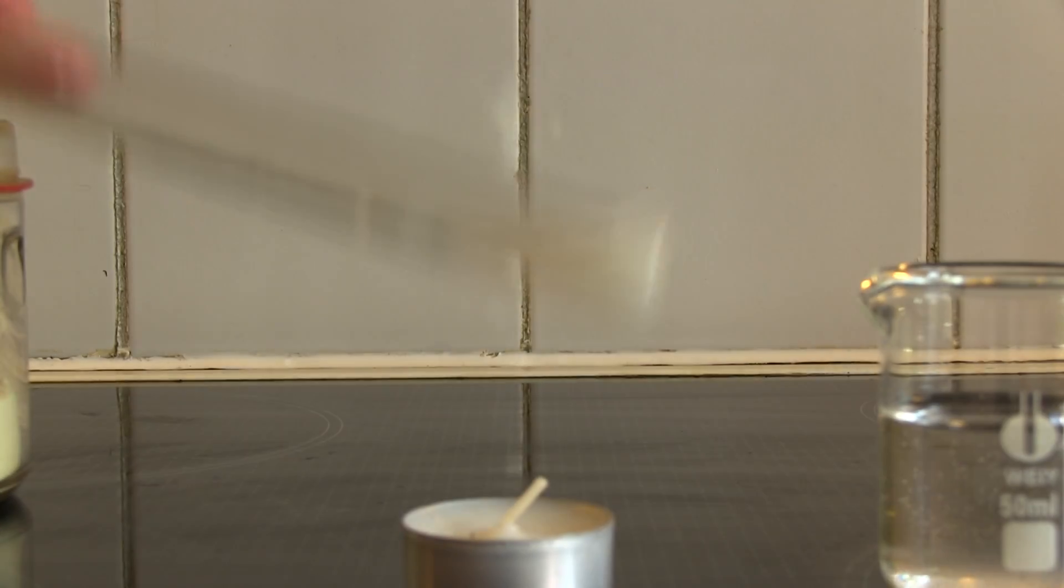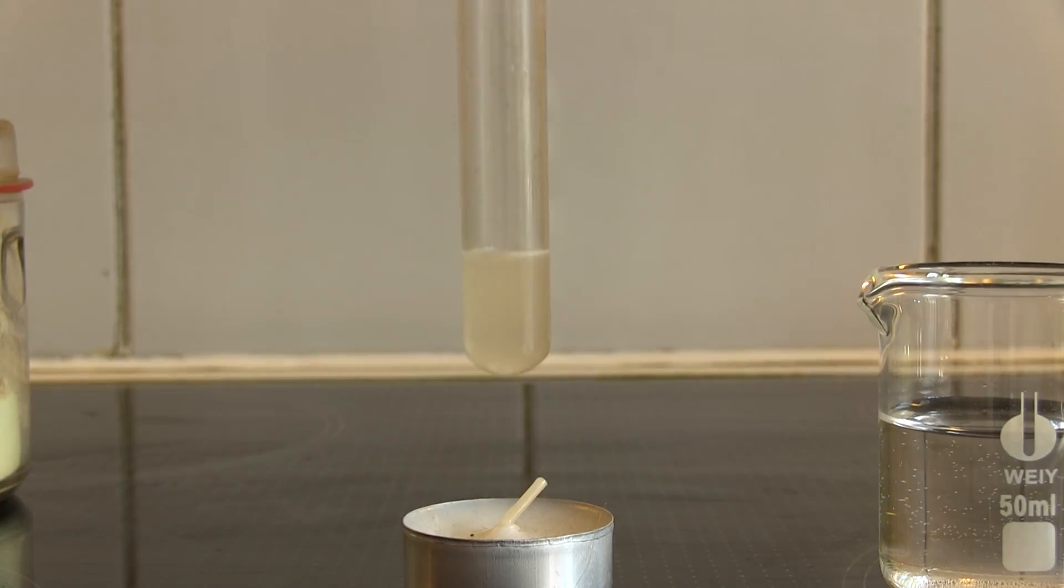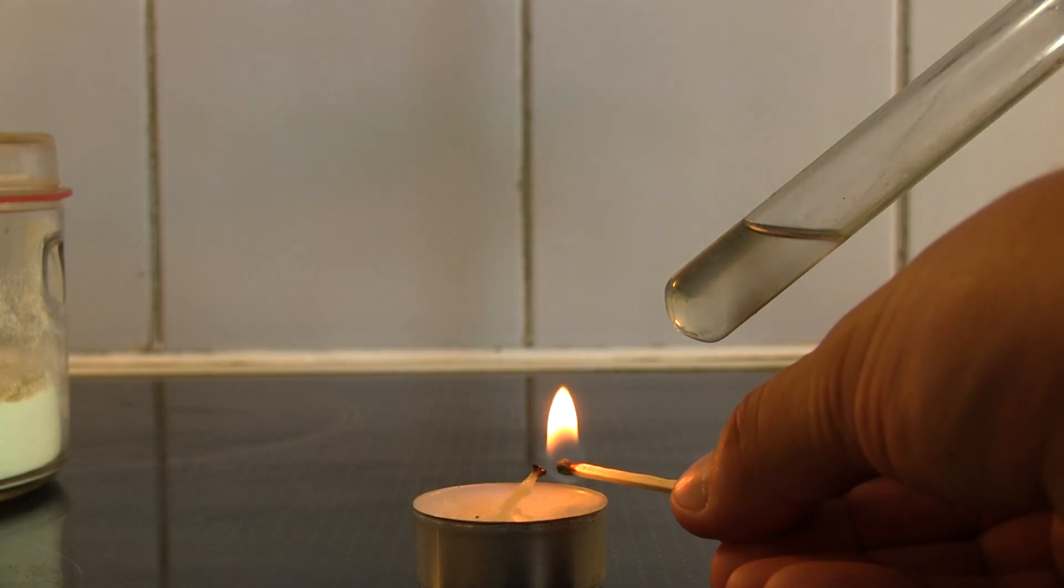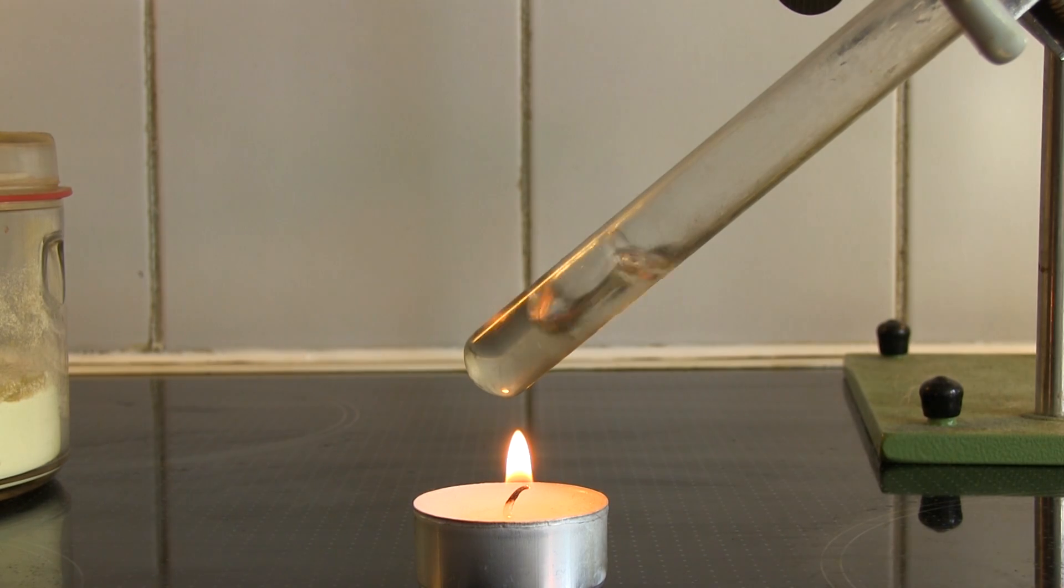First, I'll dissolve the potassium hydroxide in some water, and wait till the water clears. Then, I light the candle, and make sure the potassium hydroxide solution is boiling hot.